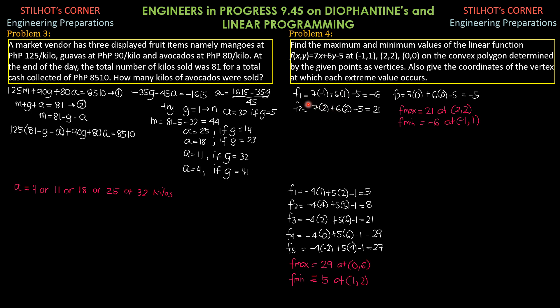One possible value, F1 would be at negative 1 comma 1. This is the function, objective function. So, 7 times negative 1 plus 6 times 1 minus 5 is negative 6. For the second point, 2 comma 2, 7 times 2 plus 6 times 2 minus 5 is 21. For the third point, 0 comma 0, 7 times 0 plus 6 times 0 minus 5 is negative 5.